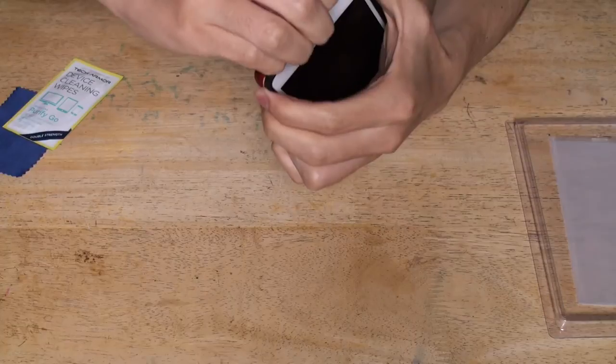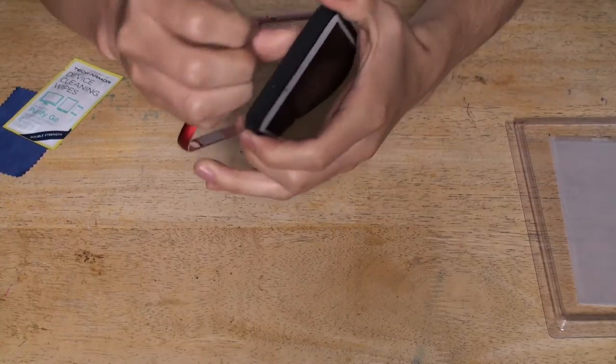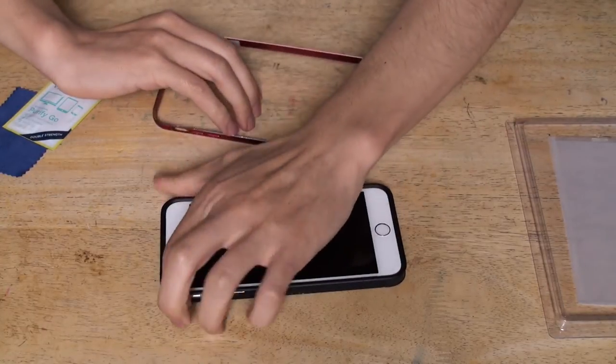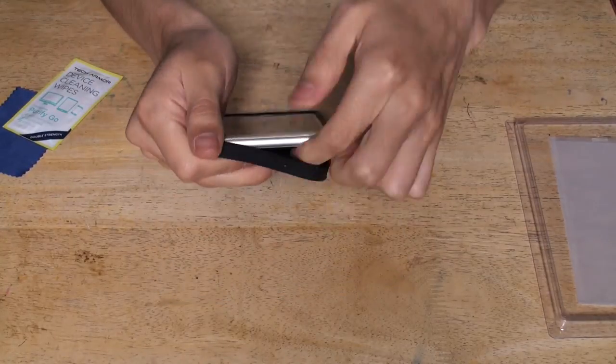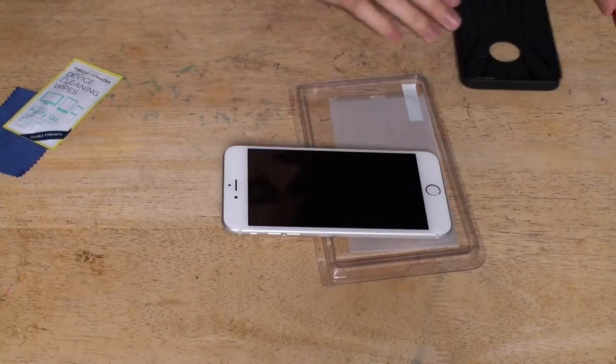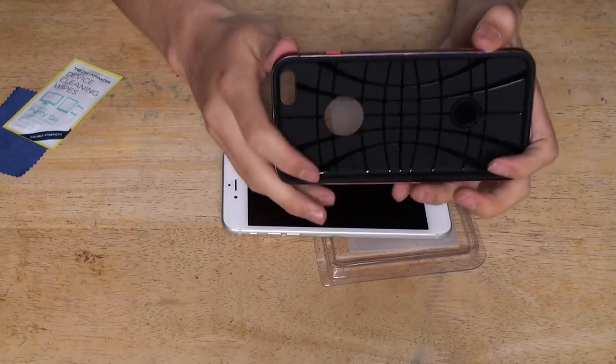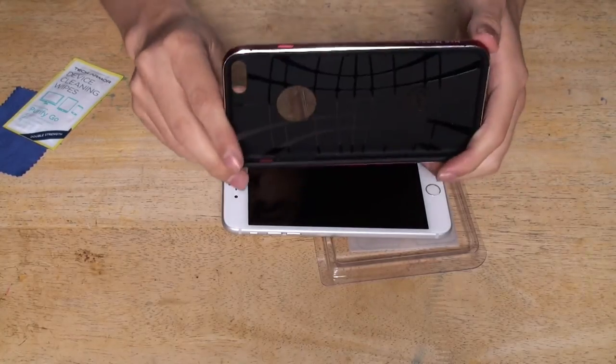Once you have one side done, you do the other side. This is the easy part. There you go. It came out pretty nice and smooth and easy to take out. It's a good cover though. You can notice it. Nice and slim.